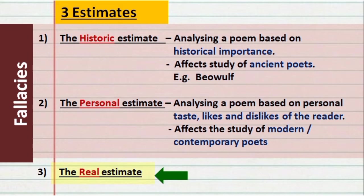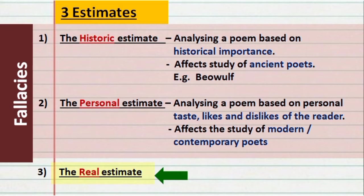The next point Arnold discusses is the three ways by which we can estimate or evaluate a poem: the historic estimate, the personal estimate, and the real estimate. When using the historic estimate, we analyze a poem based on its historical importance rather than its content — mostly affecting the study of ancient poets like Beowulf. The problem is that it raises poetry to a higher level and stops us from seeing its weaknesses, giving importance to historical significance over actual merit. Thus, Arnold does not approve of the historic estimate.